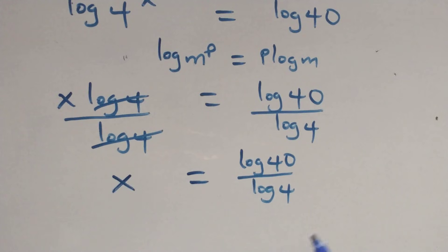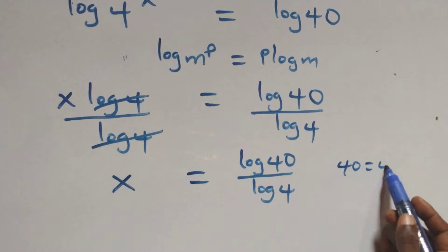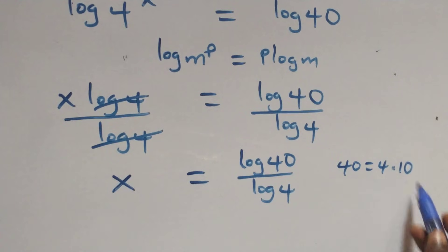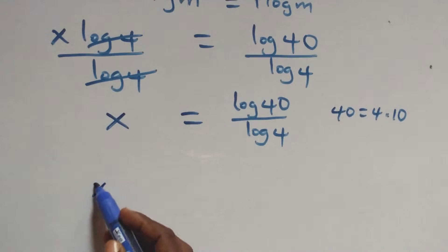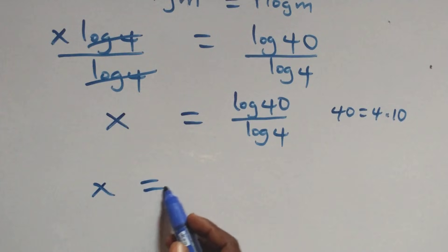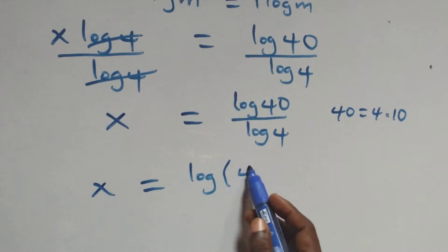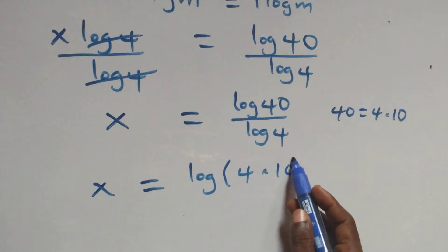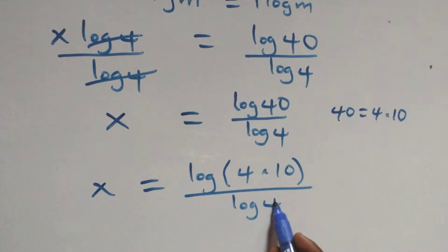Then next step here. We can write 40 as 4 times 10, which implies here what we have becomes x equals to log(4 times 10) over log 4.